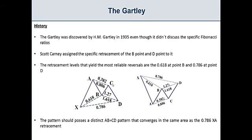Then the C point has to retrace between 38.2 and 88.6 and the D point has to retrace 78.6 of the XA leg and we must have an AB equals CD pattern right here.